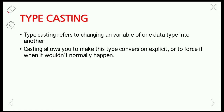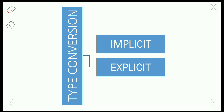Casting allows you to make type conversion explicit or to force it when it would not normally happen. There are two types of casting: explicit and implicit. Explicit means it forces the type conversion, while implicit means the conversion is done automatically by the C compiler. Explicit type conversion is done manually by the programmer using the casting operator.